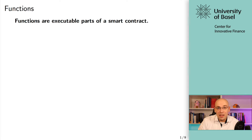It was a getter function. So the reason why we have been able to interact with the smart contract and request a value in our last example was because we declared one of these variables as public, and Solidity, in the background without us noticing, created one of these functions. Now, in this video, what we're doing is looking at how we can explicitly create these functions.